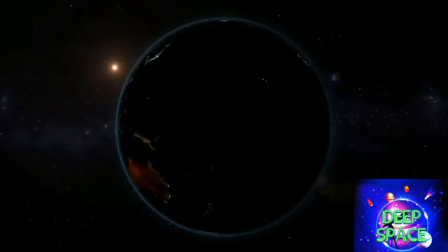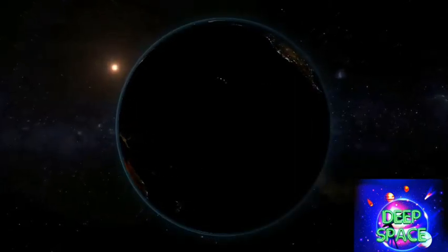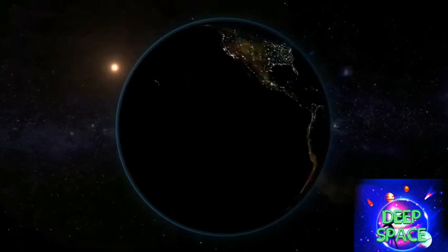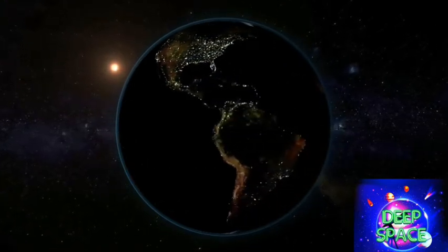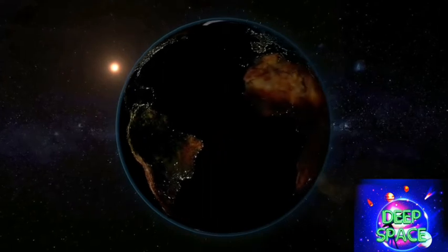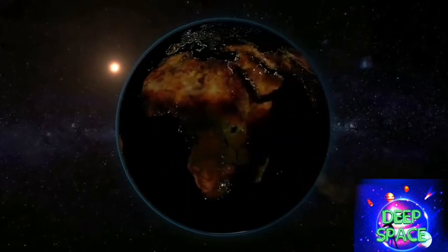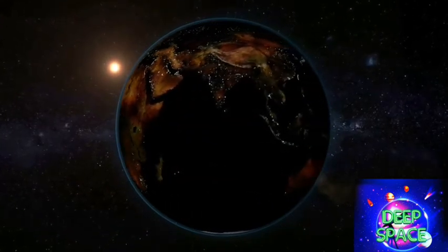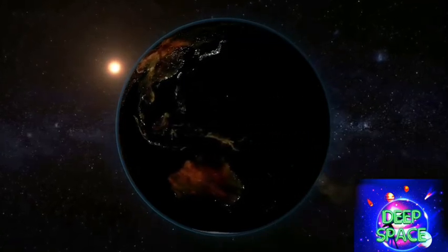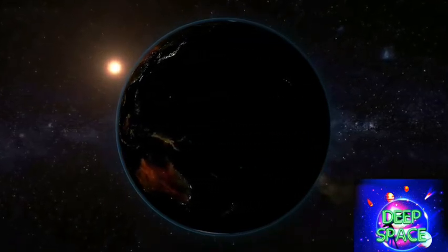Earth orbits the sun, completing one rotation every 23.9 hours. It takes 365.25 days to complete one revolution around the sun. Earth's axis of rotation is tilted 23.4 degrees with respect to the plane of Earth's orbit, at a distance of about 150 million kilometers from the sun.